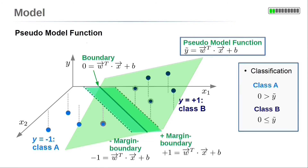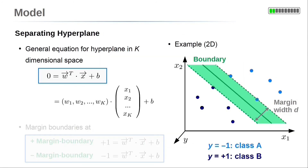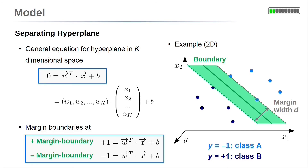With respect to our pseudo-model function y-tilde, classifying new data points is straightforward. For input values which give negative values of the pseudo-model function, we choose class A or y equals minus 1. For positive values of y-tilde, we choose class B or y equals plus 1. Here again, summarized: we have the equation for the separating boundary, and below, the two equations for the margin boundaries parallel to the separating boundary. The margin boundaries enclose the margin, and the separating boundary is in the middle. In the next section, we will look at how to determine the parameters of the model, w and b.